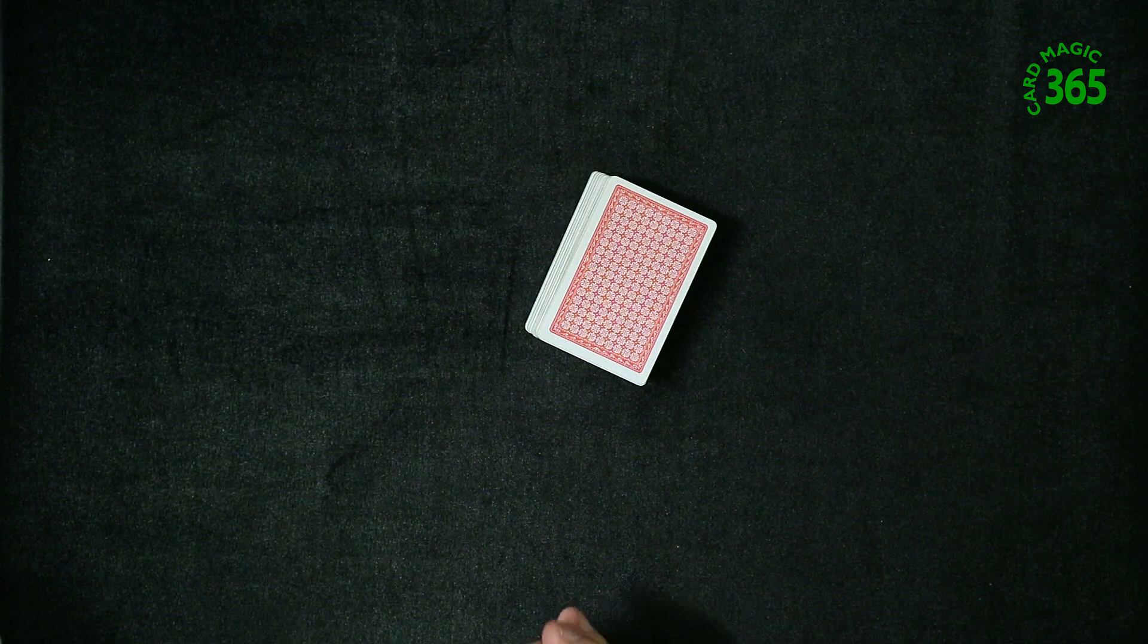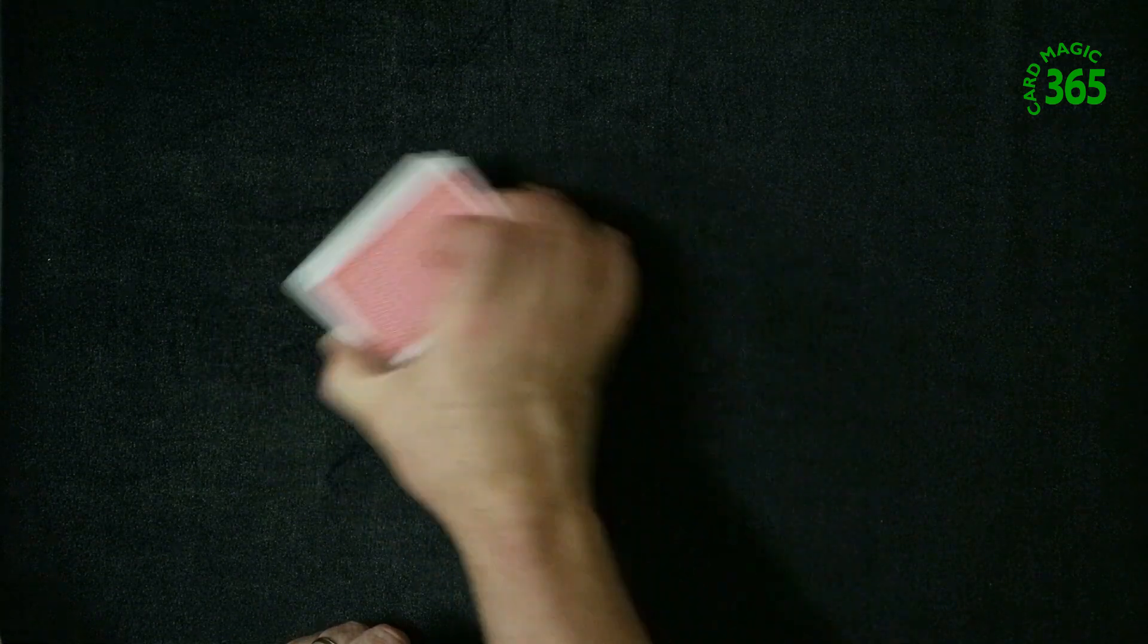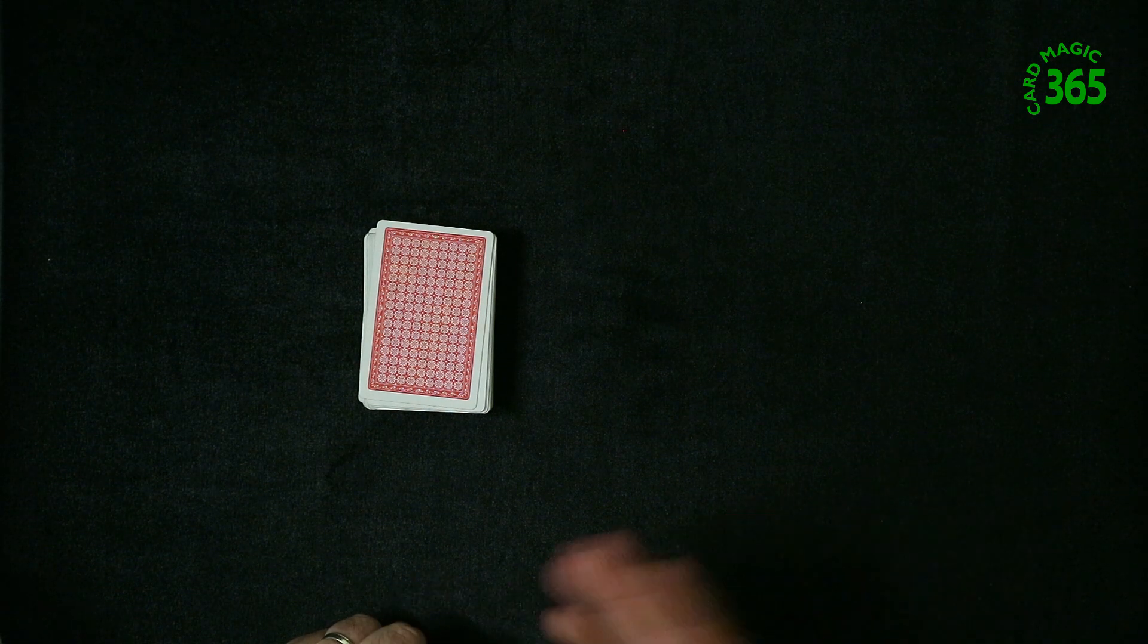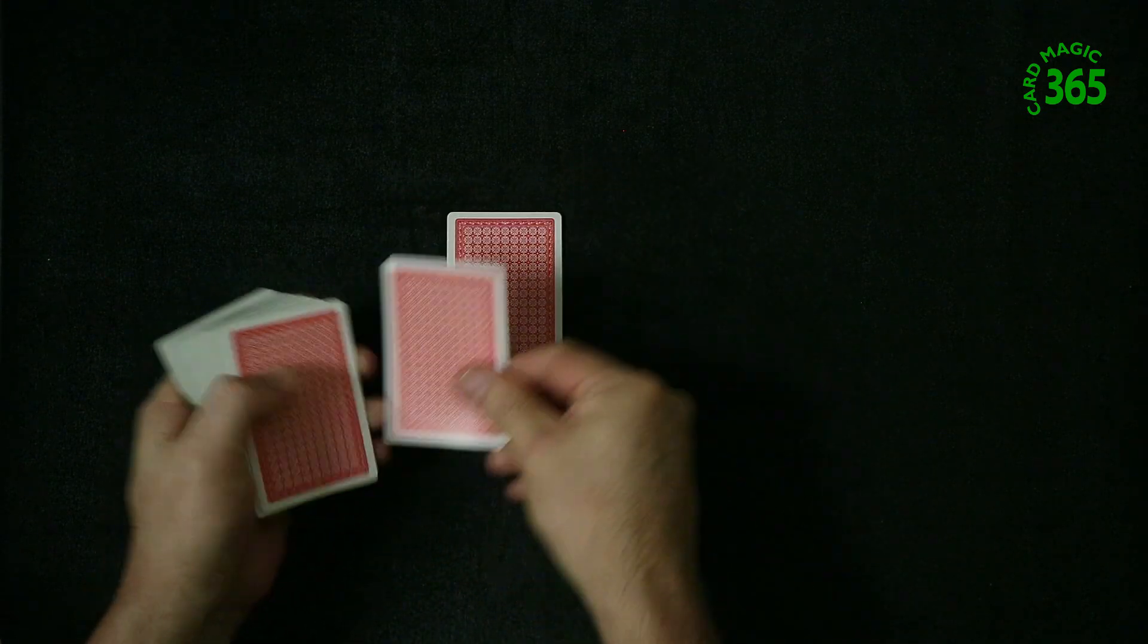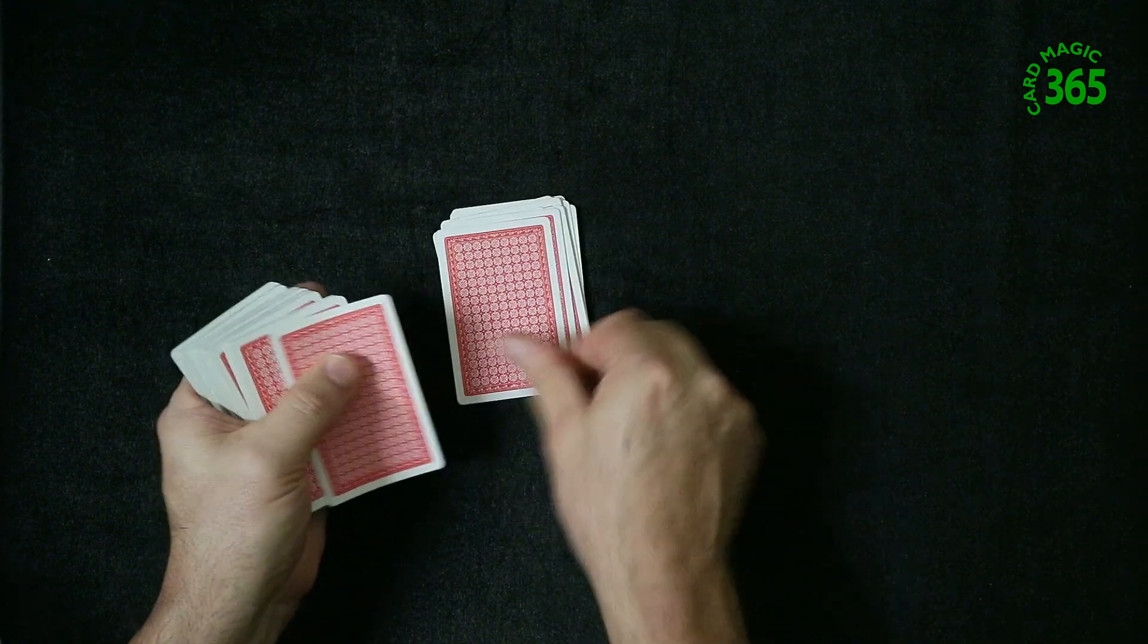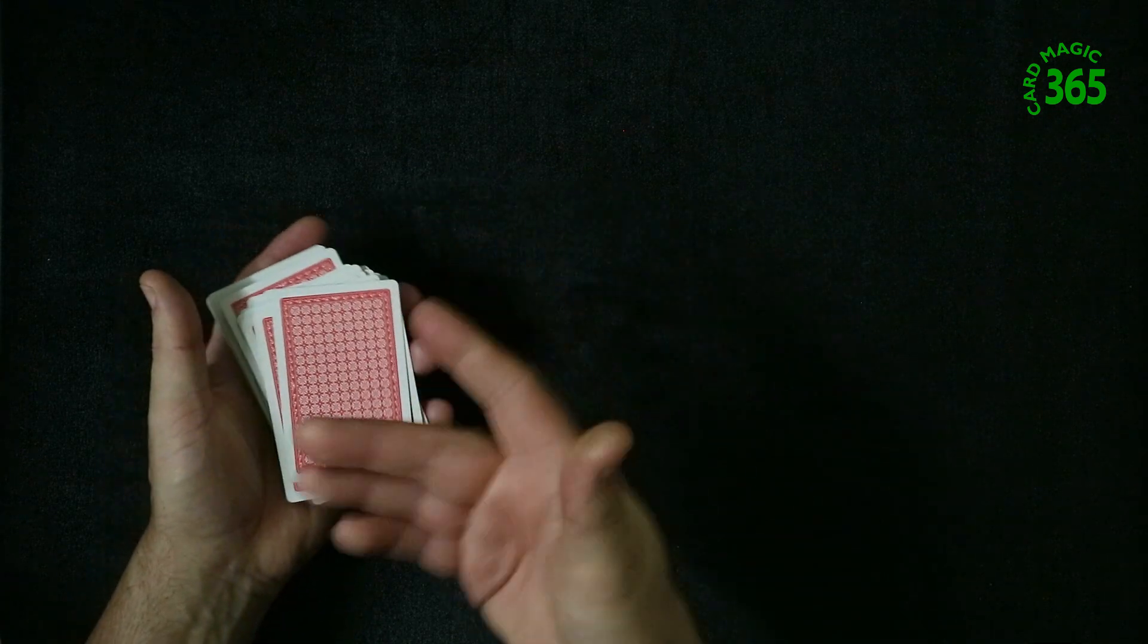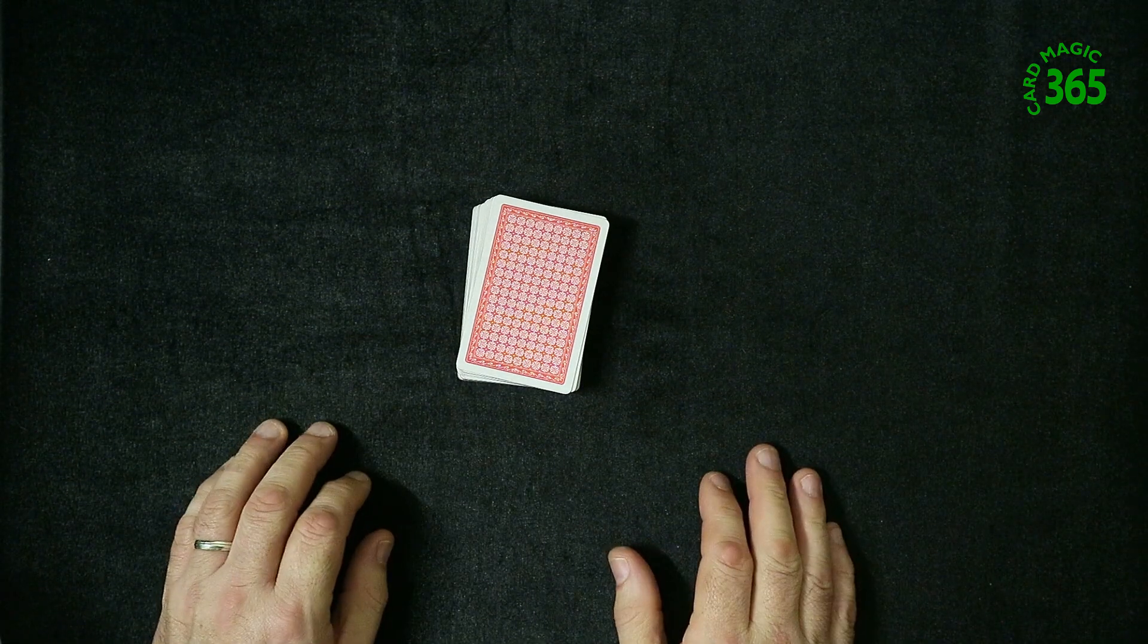Now you can either get the same spectator to pick another number a bit higher this time. It's going to be from 12 to 20. I sometimes like to say to their friend, will you have a go? You might be better than this person. So they will pick a number between 12 and 20. Let's say they picked 17. They will deal down 1, 2, 3, 4, 5, 6, 7, 8, 9, 10, 11, 12, 13, 14, 15, 16, 17. They look at the next card and again it's the incorrect card.